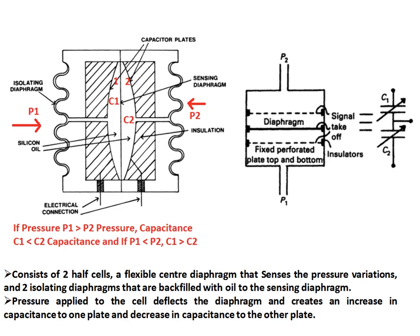When P1 is greater than P2, this pressure causes the sensing diaphragm (the moving plate) to move towards plate 2, causing capacitance C2 to increase compared to capacitance C1. Similarly, if P1 is less than P2, the sensing diaphragm moves towards plate 1, and C1 becomes higher than C2. This vectorial representation is shown in the figure, where C1 and C2 are variable capacitors.